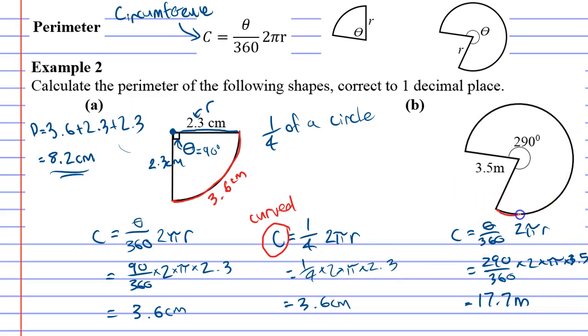Once again, that only finds the distance around the curved part. We've got to be careful. This section in red is only 17.7 meters, and I need to add the other two sections. This one is 3.5, and this line is also 3.5. To find my perimeter, I need to go 17.7 plus 3.5 plus 3.5, which gives us 24.7 meters.